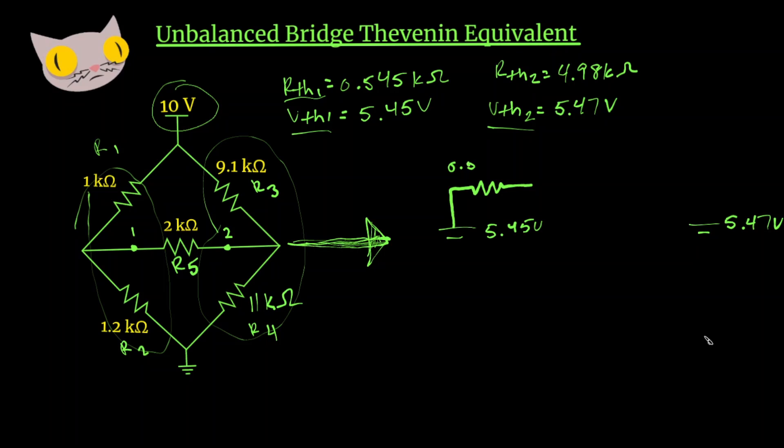0.545 kiloohms. And on this side, we have 4.98 kiloohms. And then we also have to include R5, our detector branch. So that's going to go in between, and that is 2k ohms. So we have our equivalent circuit here.